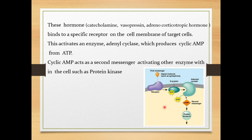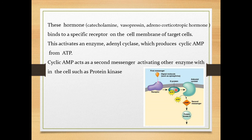Just like you cannot directly go to the chamber of a prime minister — there will be a PA for permission — similarly, the first messenger hormone cannot directly enter the cells because of its large size. So the hormone binds to a receptor on the cell surface. When the hormone binds to the receptor, there are changes inside. There are proteins called G proteins which bind with GTP and activate an enzyme called adenylyl cyclase.